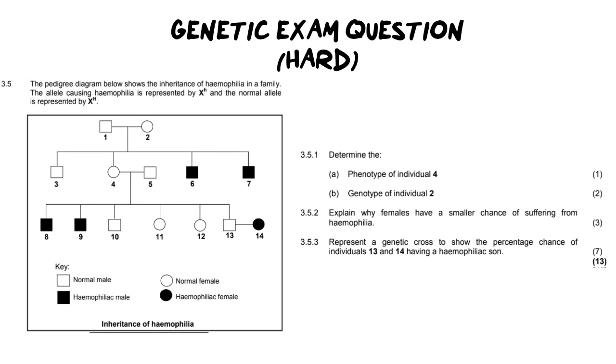Hi everybody and welcome back to Ms. Angler's biology class. I am Ms. Angler and in today's video we are going to be looking at a genetic exam question. This one is a little bit more tricky. It's based off of a hemophilia pedigree diagram. I'm going to walk you through how to interpret the diagram as well as how to answer the questions for full marks.